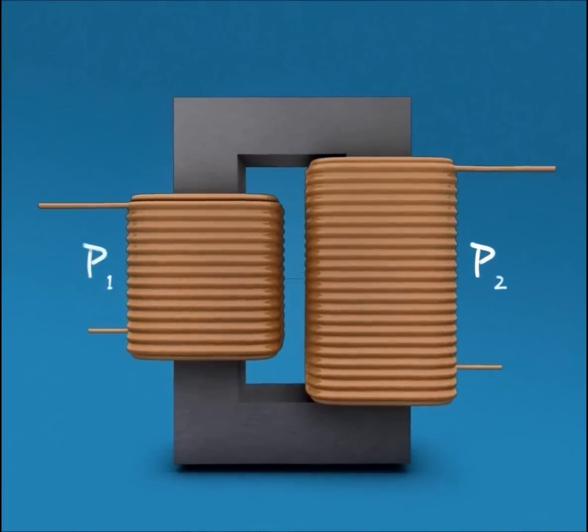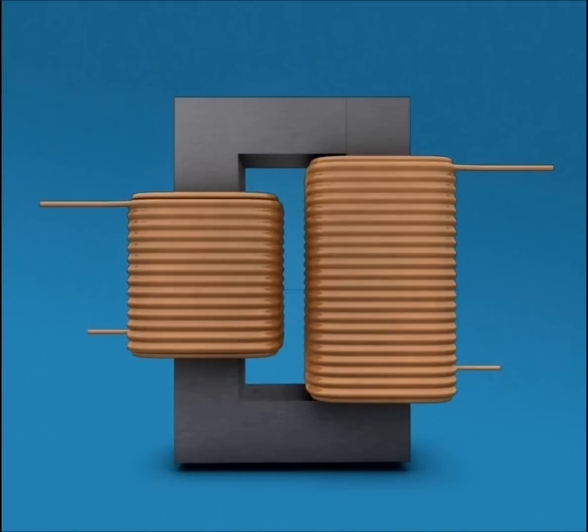As you can see here, in this case the coil on the left side, or we can call it primary coil, has lesser number of turns than the coil on the right side, or we can call it secondary coil. The transformer is called a step-up transformer.